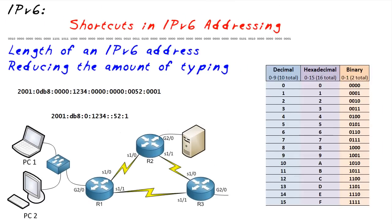Our objective in this micronugget is really simple. We want to take a look at some basic details regarding an IPv6 address and represent some methods we can use to save typing while working with them.